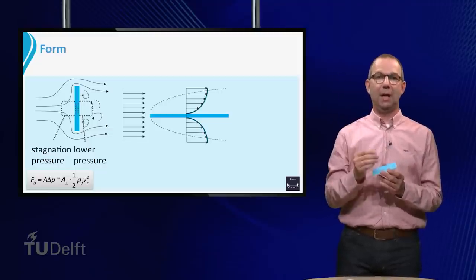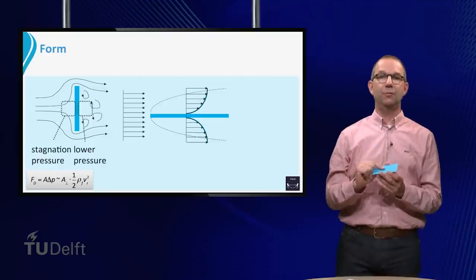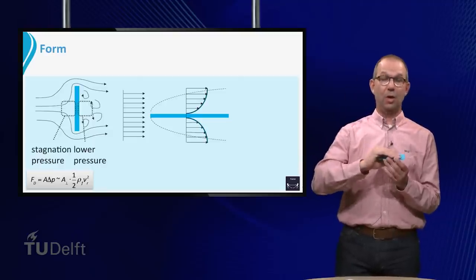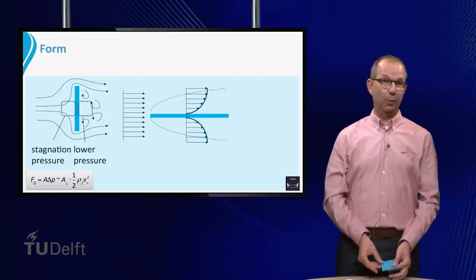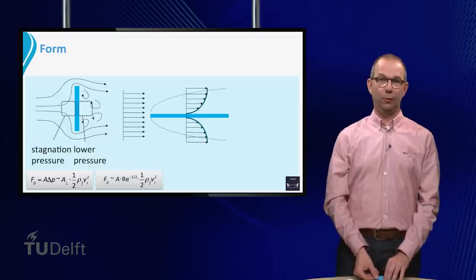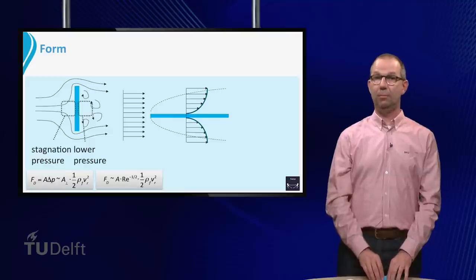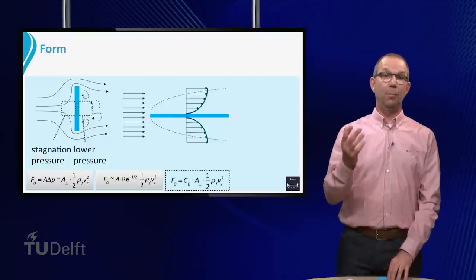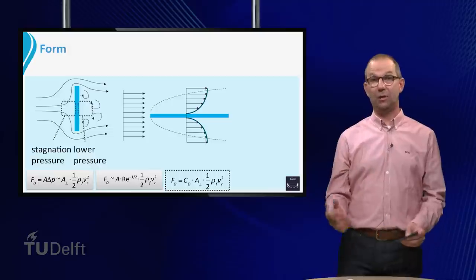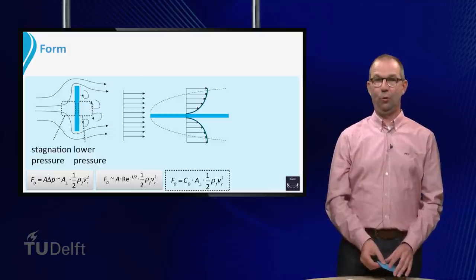whereas far away it has its original velocity. This velocity difference gives rise to a frictional force to the right and is connected to the shear stress in the fluid. Now the relation between the drag force and the fluid velocity is directly depending on the Reynolds number as well. In general, both form and shear drag are always both present and we use the modelling with the CD coefficient.